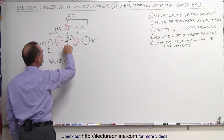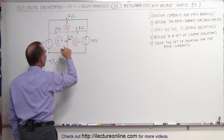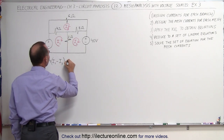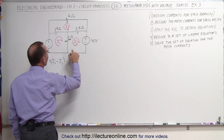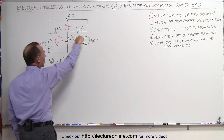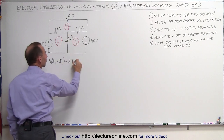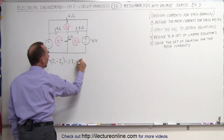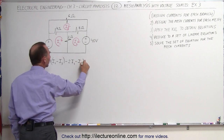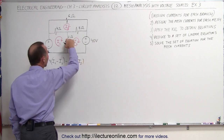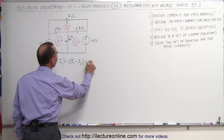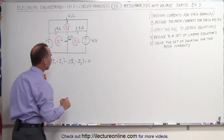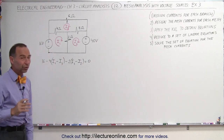Notice that a minus times a minus makes that a voltage rise relative to I3. Coming around the corner and going across the 2-ohm resistor, that is minus 2 times the current I1. But it'll be a voltage rise relative to I2, so we have to subtract I2 from that. Coming all the way around to get back to the initial point means that equals zero. There's the first equation.